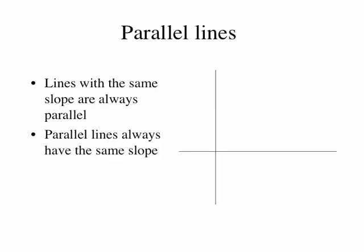First, we want to look at parallel lines. Parallel lines go in the same direction forever and ever without ever intersecting each other. We know from the equation of the line that if we have two lines that are parallel, they're going to have the same slope. They'll have different y-intercepts, but being parallel and having the same slope — those two mean the same thing.